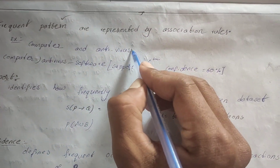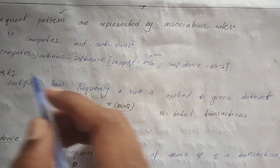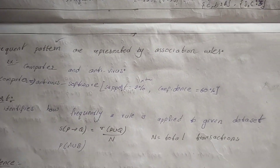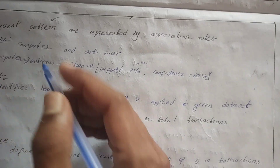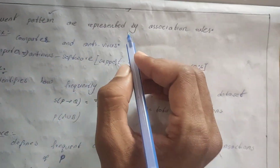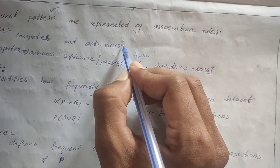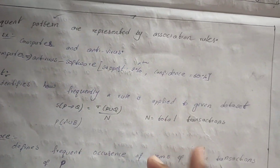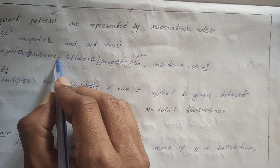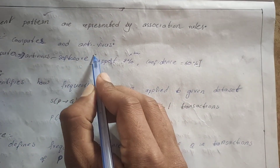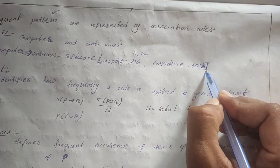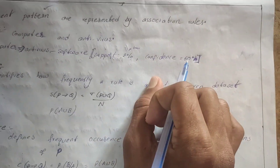For example, consider computer and antivirus. If you go to a shop and buy a computer, you will also buy antivirus software. Here the support is 2% and the confidence is 60%. Let us now discuss the definitions and formulas for support and confidence.